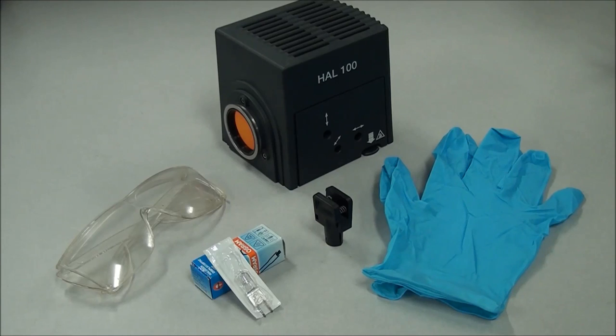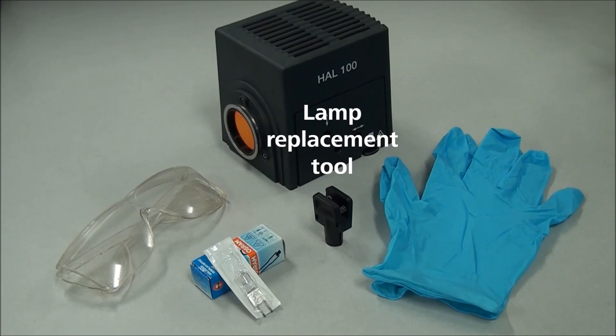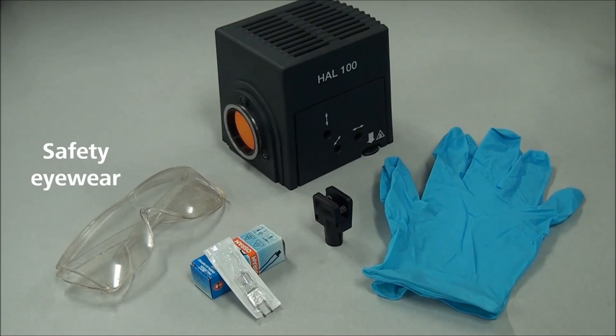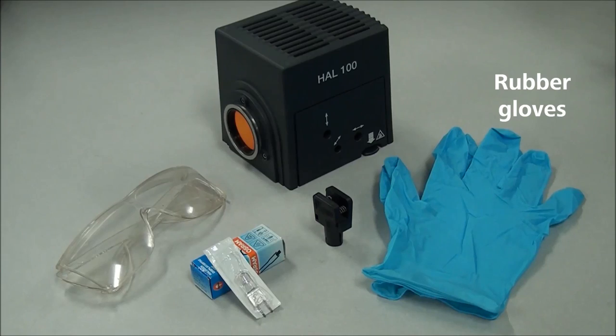When it comes time to change the bulb, follow these simple steps to complete the process. You'll need the following: lamp replacement tool, a new HAL bulb—make sure the voltage of the bulb matches that of the HAL unit—safety eyewear, and rubber gloves.